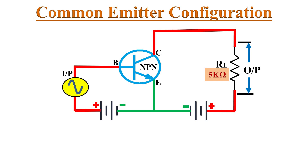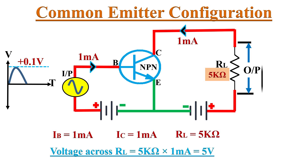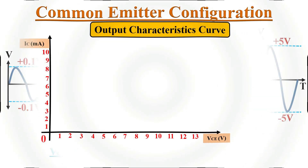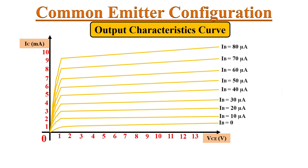Now, if we apply a sine wave input signal at the base of a BJT, the BJT can amplify a small 0.1 volt input signal and we will get an amplified output signal at the load resistor RL. The amplified output signal of a BJT amplifier depends on the biasing, so proper biasing is crucial for the correct operation of a BJT amplifier. Let's understand this with output characteristic curves. If the BJT is biased such that VCE equals 5 volts and collector current IC equals 5 milliamperes, this point on the characteristic curve is known as the operating point or Q point of the BJT, because it tells about the operating voltage and current.